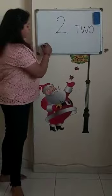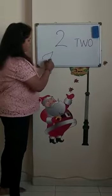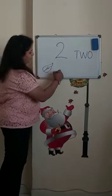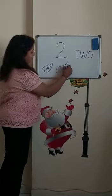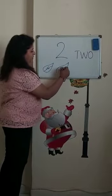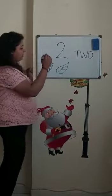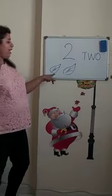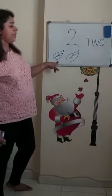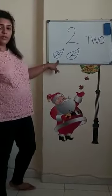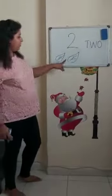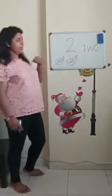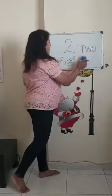Now, what is this, children? What is this? It's a leaf, right? So how many leaves are there? Count. 1, 2. 2 leaves are there. Very good.